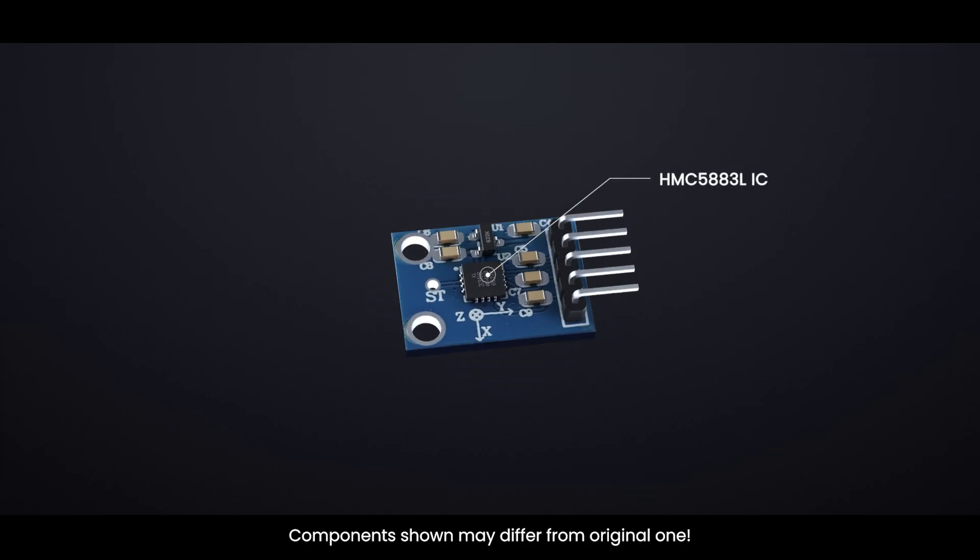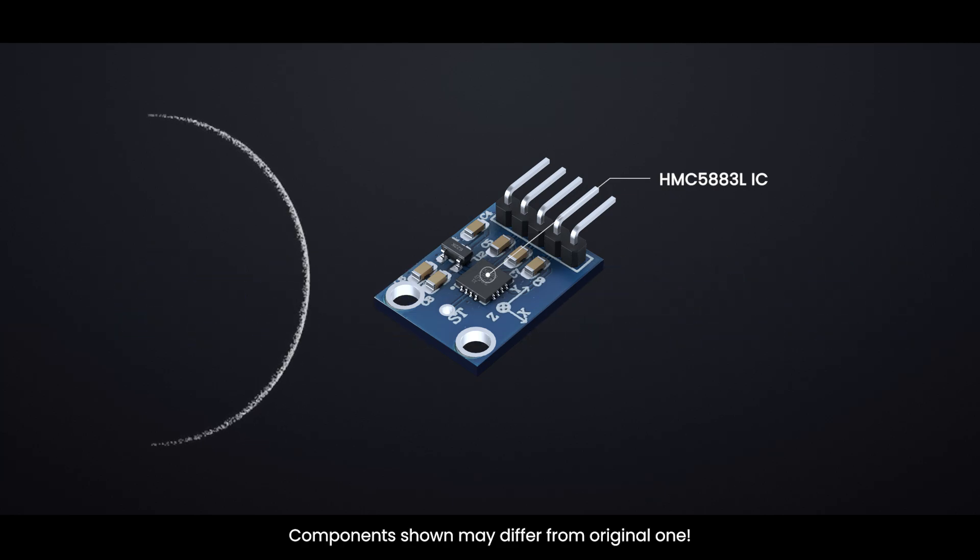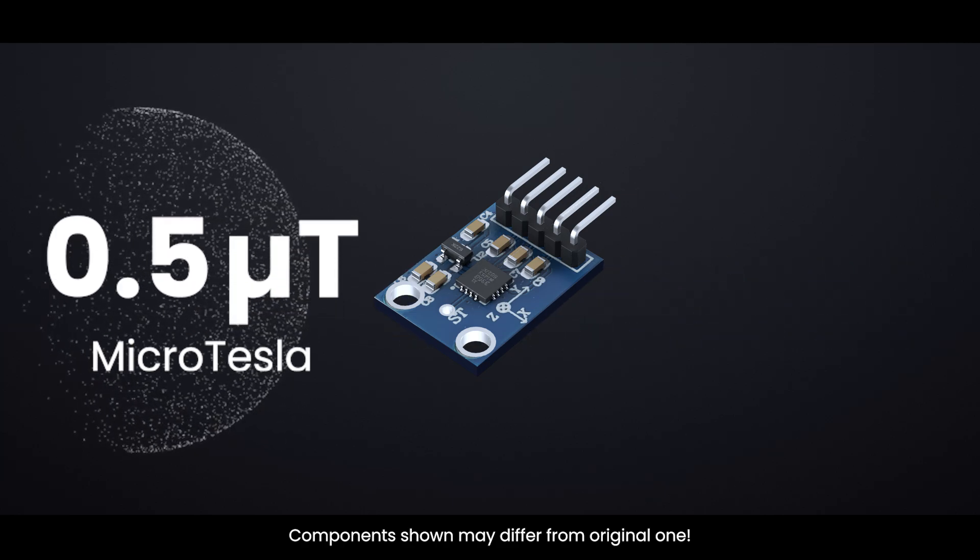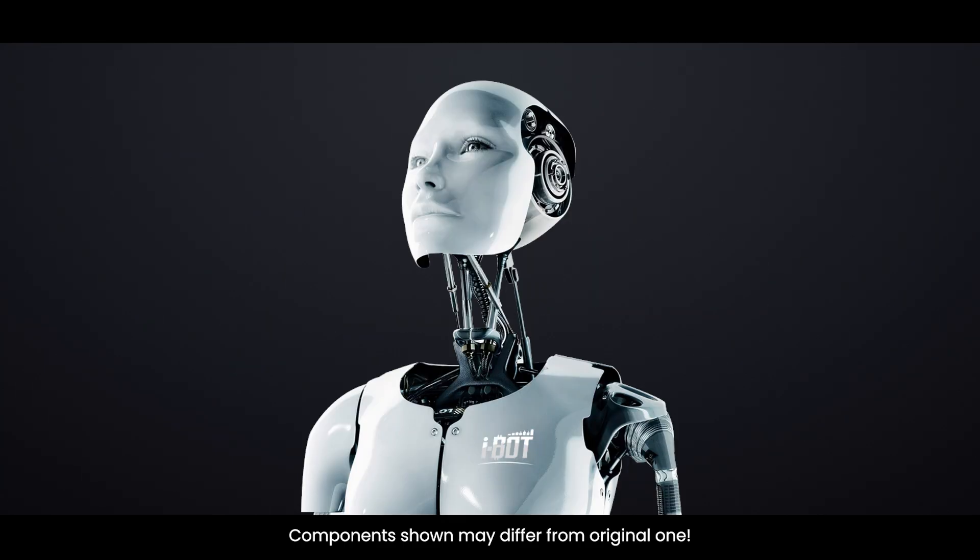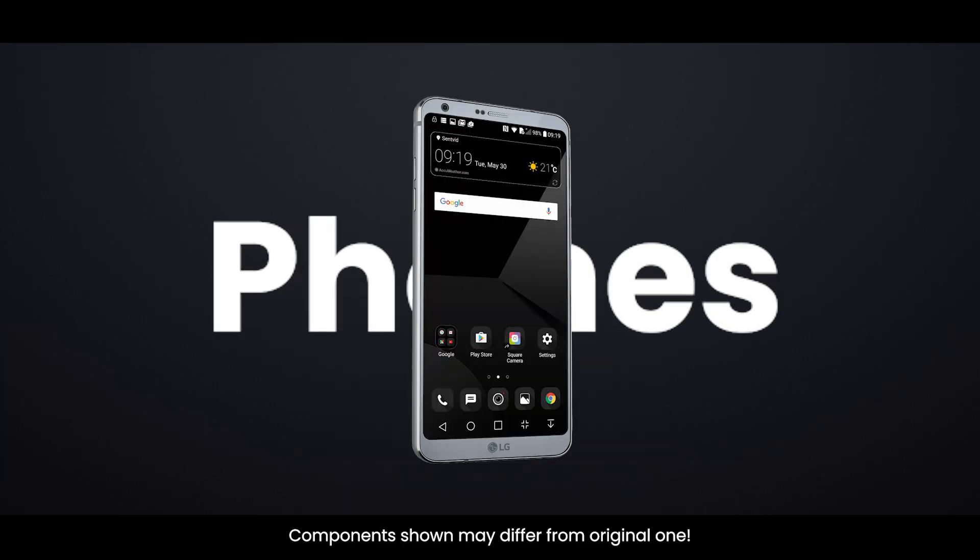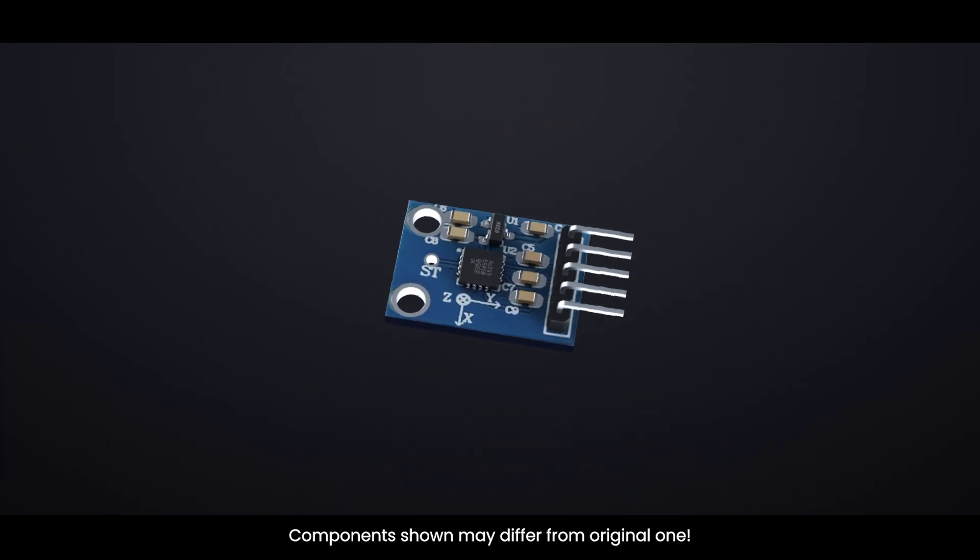The HMC5883L is a fingertip-sized 3-axis magnetometer that senses Earth's field with 0.5 microtesla resolution, digitizes it to 12-bit words, and streams the data over I2C, giving drones, robots, and mobile devices precise, low-power compass heading after simple tilt compensation math.